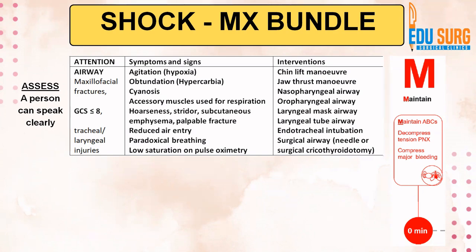Move the neck, look at signs of injury, and rule out C-spine injuries. Specific symptoms and signs for airway: agitation is a feature of hypoxia, whereas obtundation is a feature of hypercarbia — drowsy patients are more likely hypercarbic and agitated patients more likely hypoxic. You can look at cyanosis in the extremities, the lips, the ear lobes, accessory muscles being used for respiration, hoarseness, stridor, subcutaneous emphysema, a visible or palpable fracture, reduced air entry in one side of the lungs, paradoxical breathing, and low saturation on pulse oximetry.